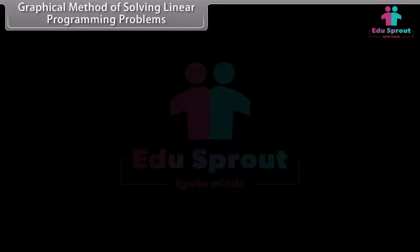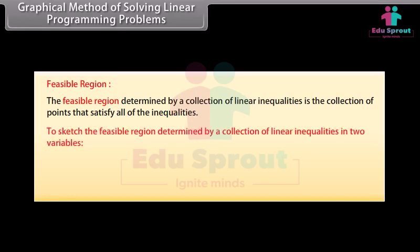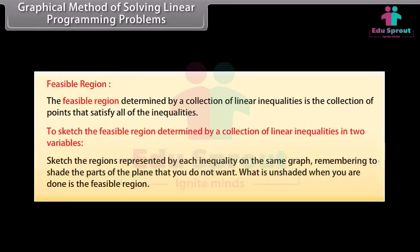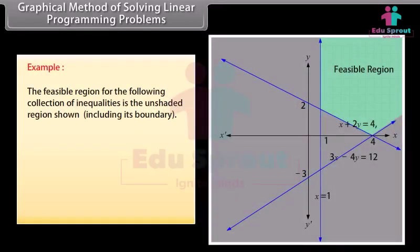Graphical method of solving linear programming problems. Feasible region: The feasible region determined by a collection of linear inequalities is the collection of points that satisfy all the inequalities. To sketch the feasible region determined by a collection of linear inequalities in two variables, sketch the regions represented by each inequality on the same graph, remembering to shade the parts of the plane that you do not want; what is unshaded when you are done is the feasible region. Example: The feasible region for the inequalities 3X minus 4Y less than or equal to 12, X plus 2Y greater than or equal to 4, X greater than or equal to 1, Y greater than or equal to 0 is the unshaded region shown including its boundary.